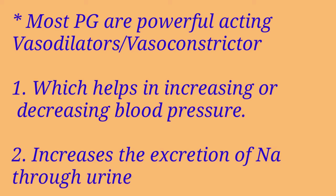The action of prostaglandin is found in the kidneys, in which vasodilation leads to an increase in blood flow to the kidney and increases the excretion of sodium in urine. On the other hand, thromboxane are powerful vasoconstrictors that cause a decrease in blood flow and an increase in blood pressure.